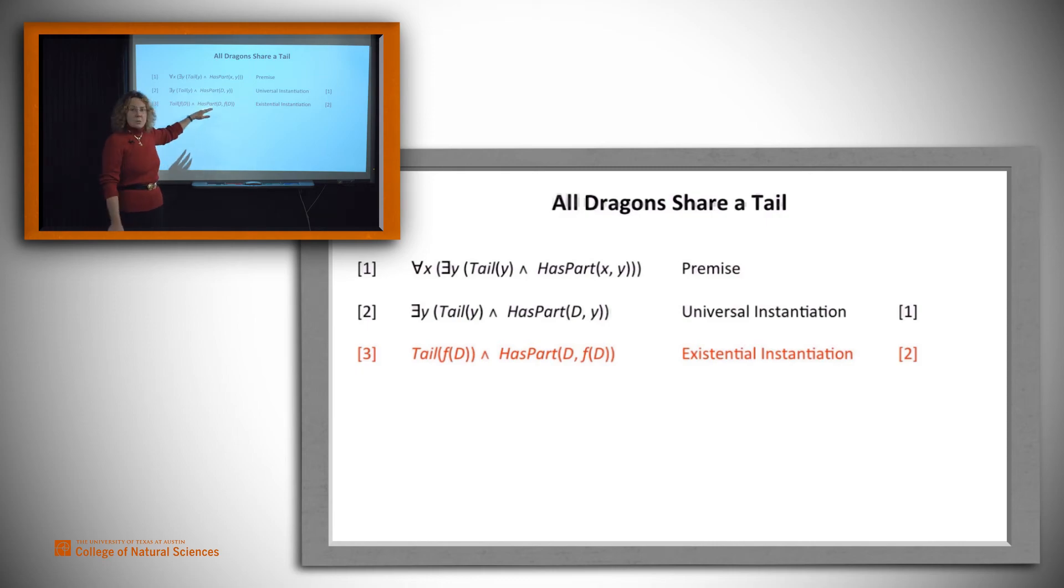Now that we've got this, we can continue. And yes, we can generalize to an arbitrary dragon. So we have for all X, there is some tail that's a function of x. And x has it as a part, that's fine. And now, can we do that last step? Can we assert that there is one tail that goes with every dragon? That's what we were able to do last time. Can we do it?